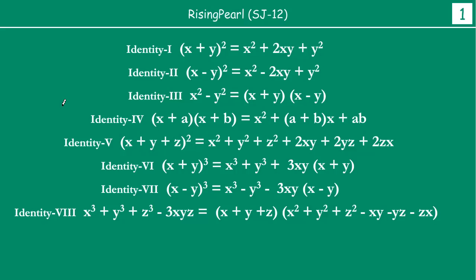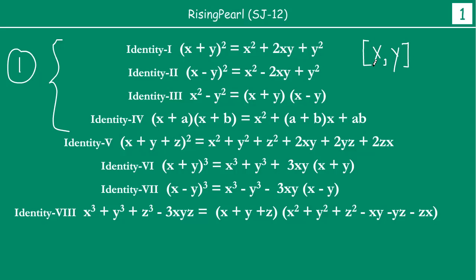Before we jump into some of the difficult questions, let us notice that identities 1 through 4 form our first set. Why are they a group? Because in all of them you have two variables x and y, and the maximum power you are dealing with is square. So when you have any question with two variables and maximum power of square, you immediately have to relate it to one of these four identities.